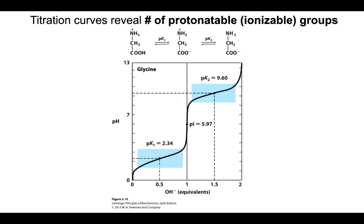Now that we're looking at molecules that have more than one protonatable or ionizable group, like glycine, let's look at the titration curve of glycine. To titrate out a glycine molecule, you need to deprotonate not only all of the carboxyl groups but also all of the amino groups. So instead of needing one equivalent of strong base, you need two equivalents.